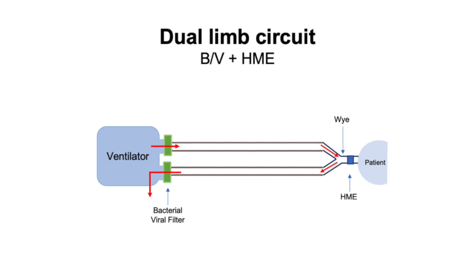For example, in a dual limb circuit setup without the active heat and humidification system, a heat moisture exchanger shown in blue is placed at the patient Y. Known as an HME, these do not necessarily have bacterial viral filtering capabilities and must always be used with a bacterial viral filter in line on the inspiratory limb.